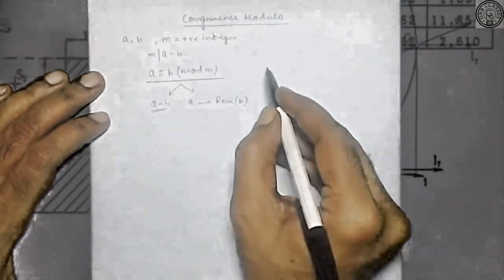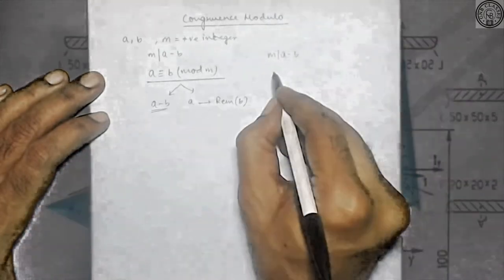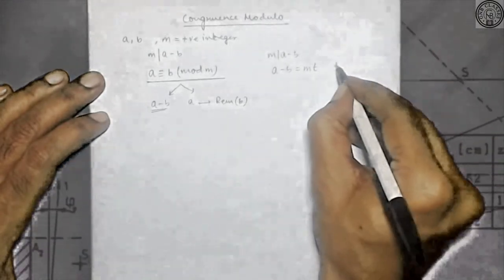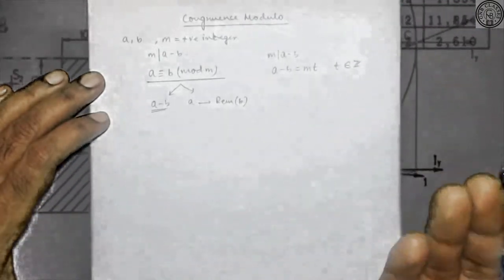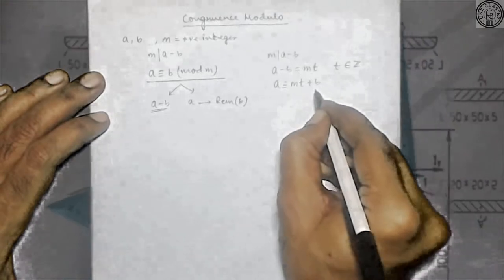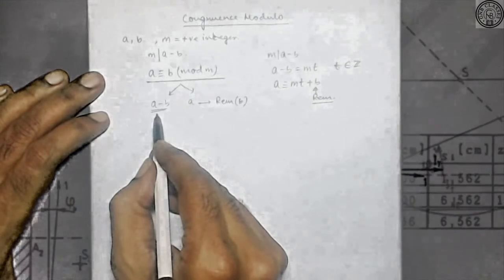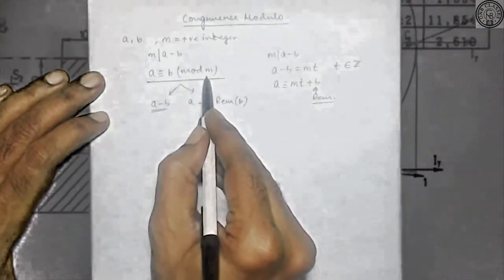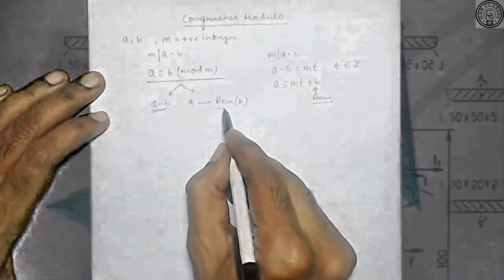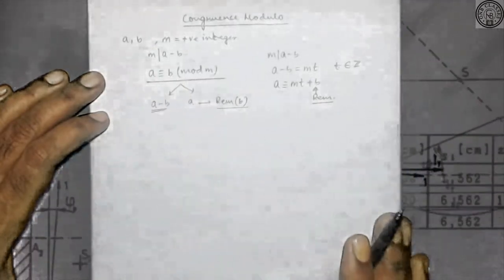From the basic divisibility rule, when m divides a minus b, then a minus b is nothing but m times some integer t, where t is also called the quotient. So a equals mt plus b, which means b is nothing but the remainder. That is exactly what I said: when a is congruent to b modulo m, it means that when a is divided by m, the remainder will be b, or a minus b is completely divisible by m.